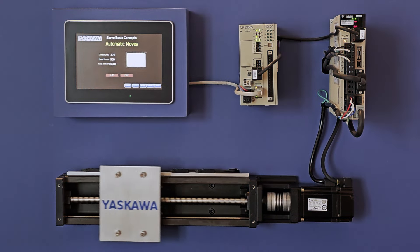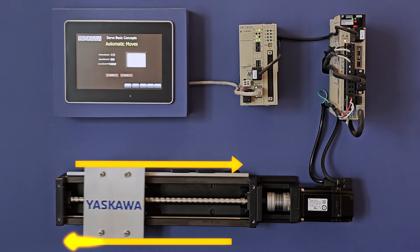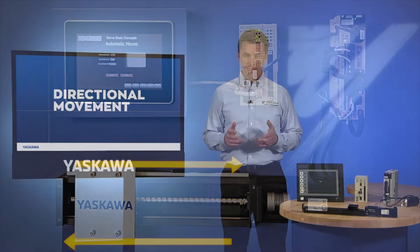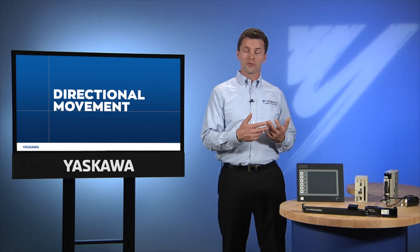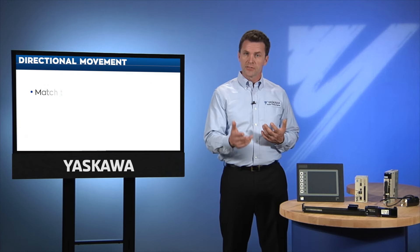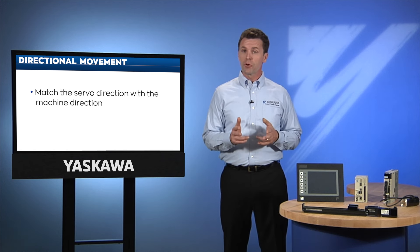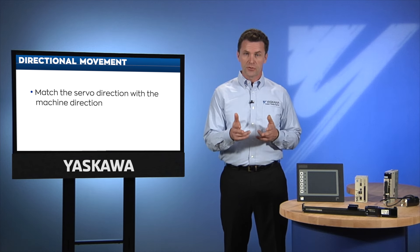This particular controller is programmed to move the axis in both a forward and a reverse direction. To do so, it needs to define what forward and reverse means. What is considered forward for the servo may turn out to be reverse with respect to the machine. It is important to match the servo direction with the machine direction, not only for programming the controller, but also for any other features in the servo amplifier that are sensitive to direction.